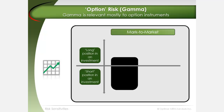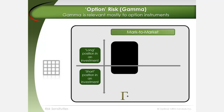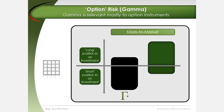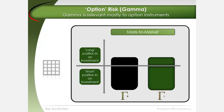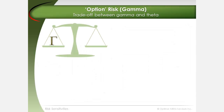As prices rise or rates fall, positive gamma, or the buying of optionality, favorably makes long positions progressively longer and reduces short positions. Conversely, in volatile markets, negative gamma, or the selling of optionality, adversely makes long positions progressively shorter and increases short positions. As prices fall or rates rise, negative gamma also adversely makes long positions progressively longer and reduces short positions. The trade-off to being long or short gamma is time decay, which is known as theta.